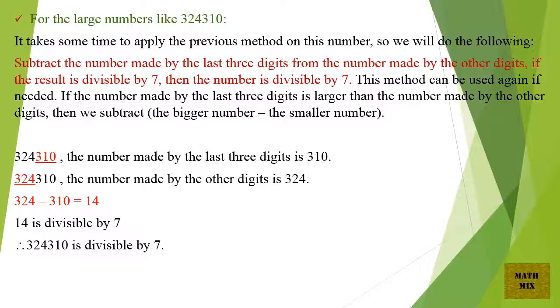If the number made by the last 3 digits is larger than the number made by the other digits, then we subtract the bigger number minus the smaller number. The number made by the last 3 digits is 310. The number made by the other digits is 324. 324 minus 310 equals 14. 14 is divisible by 7. Therefore, 324,310 is divisible by 7.